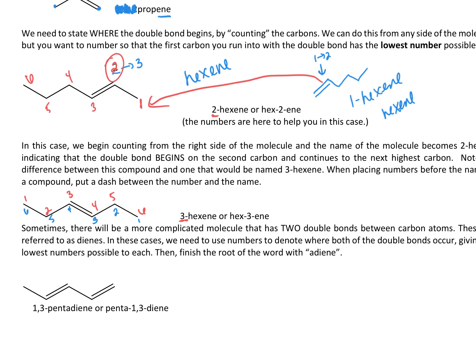If we want to get into real fancy double bonds, we can have 2 in the same molecule. We would refer to that as a diene, di meaning 2. That's telling people that there are 2 sets of double bonds. To get to the lowest numbers possible, that would be 1, 2, 3, 4, 5. We have to tell people where both of those double bonds are. So that's why it is 1,3-pentadiene.